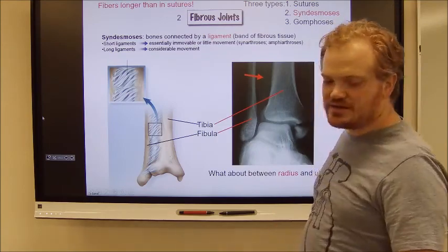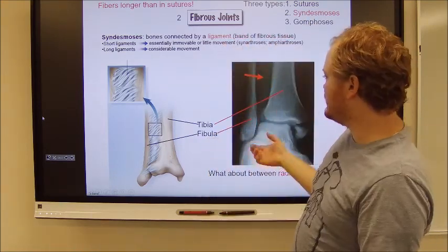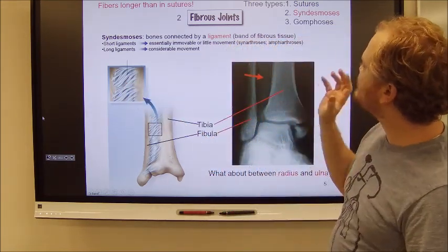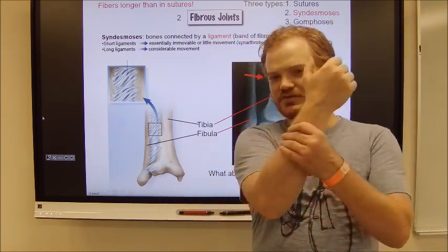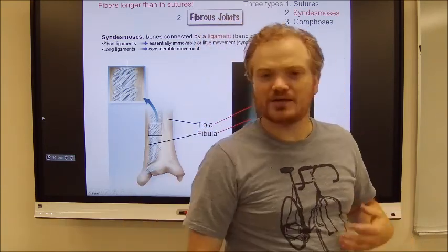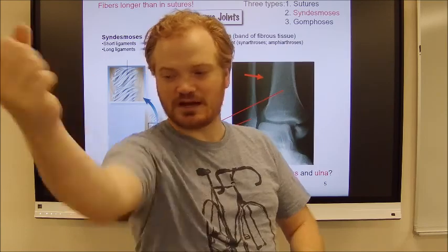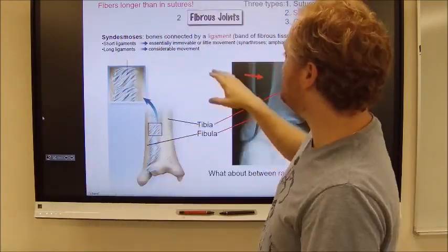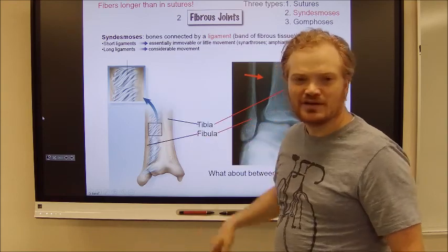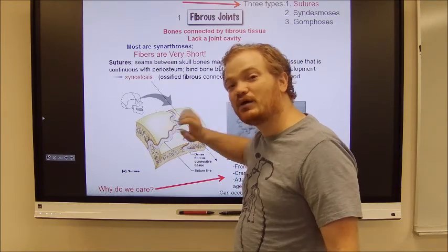Next are syndesmoses. Syndesmoses are, for instance, the interosseous membranes between the radius and the ulna, or the interosseous membranes between the tibia and the fibula. These are still fibrous joints, but because the fiber length can be a little longer, they can be a little amphiarthrotic. In the tibia and fibula it's more on the synarthrotic side — these don't really move — but between the radius and the ulna there's a little movement allowed. So syndesmoses have longer ligaments between bones allowing some degree of movement, by comparison to tiny little ligaments allowing no movement at all.